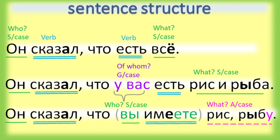Что? Он сказал что есть все. In Russian: Он сказал что есть все. The last two sentences have the same meaning but different cases.